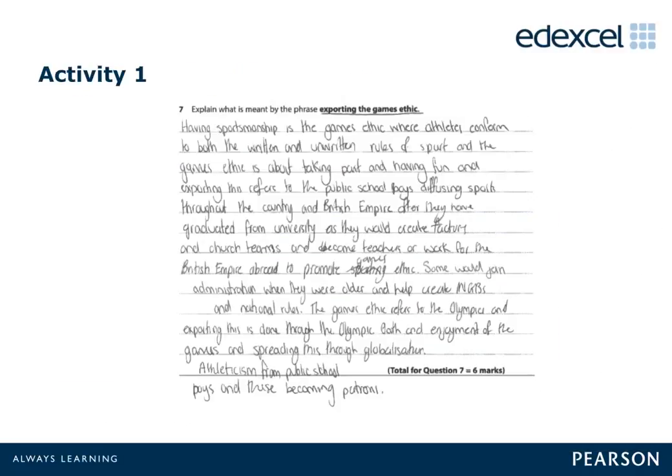Activity 1, Question 7. This question required learners to explain what is meant by the phrase 'exporting the games ethic.' The purpose of this activity is to give you the opportunity to look at an aspect of the mark scheme in more detail and to see how the mark scheme is applied for these types of questions — that is, knowledge is grouped, therefore not every correct statement is credited if it repeats the same type of information. Using this example, apply the mark scheme provided to decide what mark you think should be awarded and why. Pause the video now if you wish to carry out the activity.